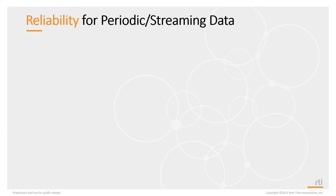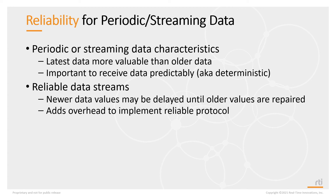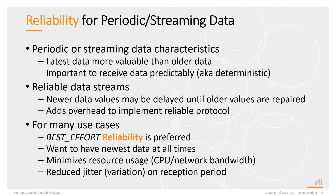For periodic or streaming data, reliability may not be what you want. With streaming data, the latest data is more valuable than older data, and it's important to receive it deterministically and predictably. With reliable streams, newer data values may already be in your application but won't be accessible until all older values are repaired, adding overhead and introducing non-determinism. For many streaming use cases, best effort reliability is actually preferred — it gives you access to the newest data at all times, minimizes CPU and network bandwidth consumption, and reduces jitter in reception time.